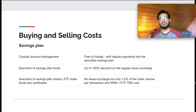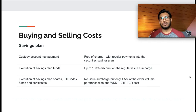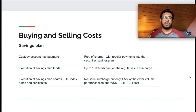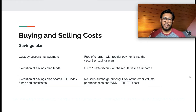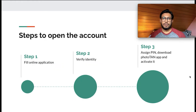For savings plans, Comdirect charges 1.5% of your order volume per transaction, in addition to the total expense ratio of the ETF you're buying. For example, if you buy an ETF that costs €100, you'll be paying €1.50 as a transaction fee, in addition to the total expense ratio which varies ETF to ETF.